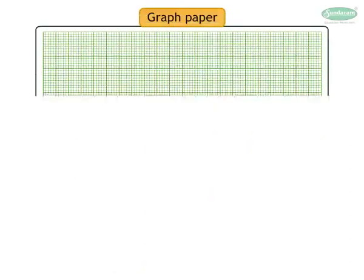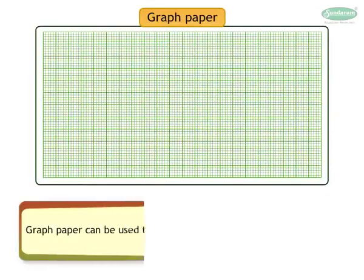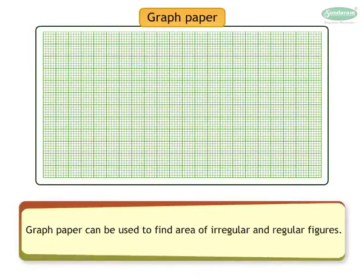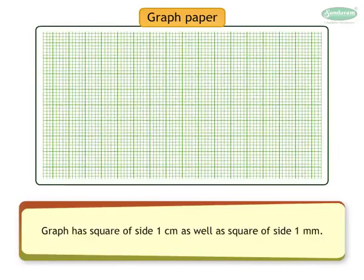Let us look at the use of graph paper. Graph paper can be used to find the area of irregular and regular figures. The graph has squares of side 1 cm as well as squares of side 1 mm.